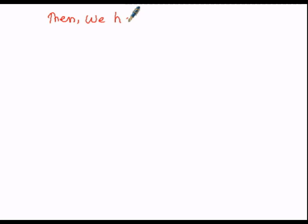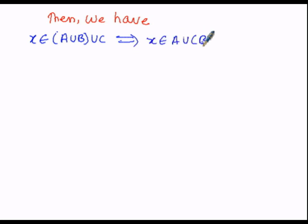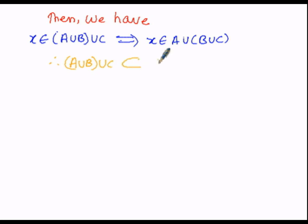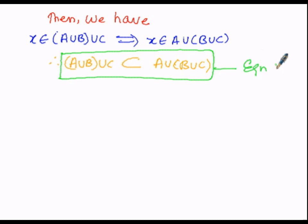We have X∈(A∪B)∪C implies X∈A∪(B∪C). From this it is clear that any element X belonging to (A∪B)∪C is also present in A∪(B∪C). Therefore, (A∪B)∪C ⊆ A∪(B∪C). In this manner we have proved the first condition; let us write this as equation number 1.